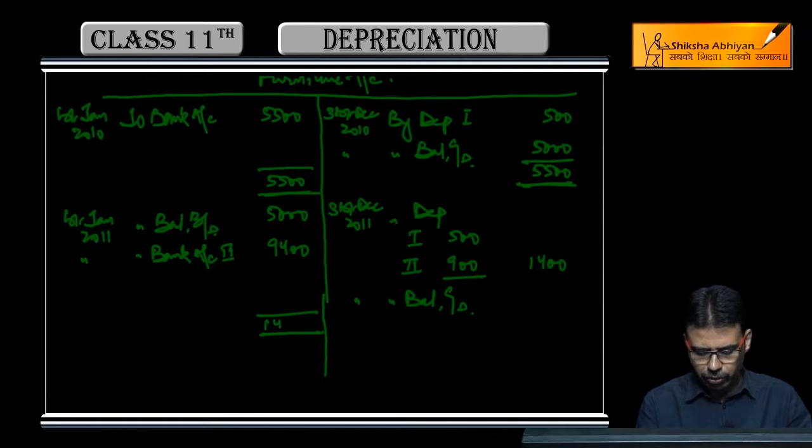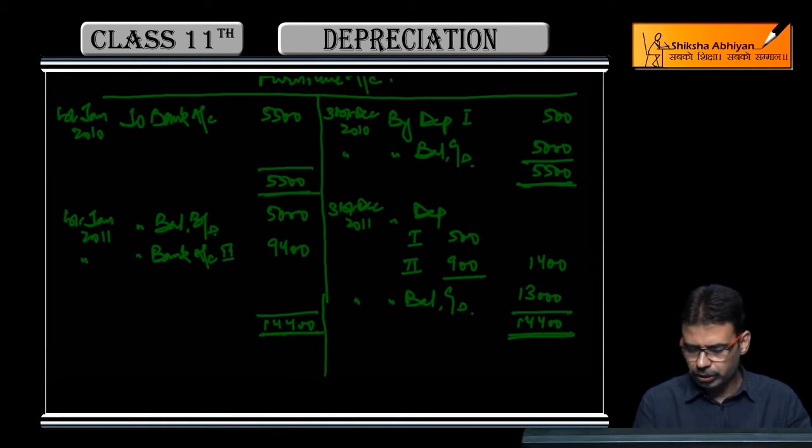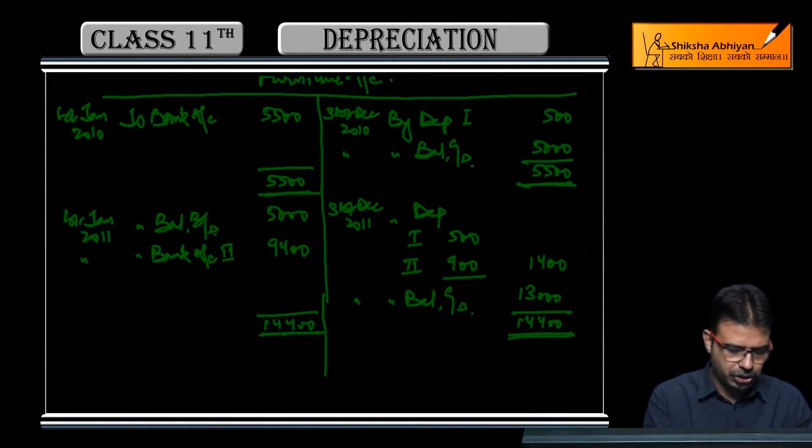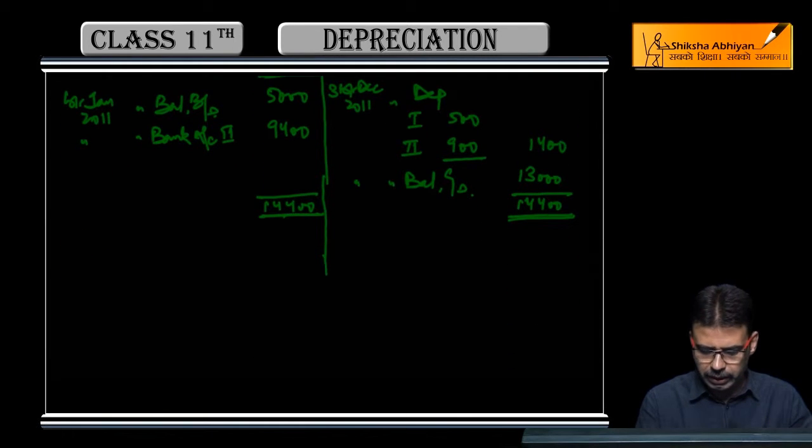Total is Rs. 14,400. From Rs. 14,400 minus Rs. 1,400 depreciation, the balance is Rs. 13,000. We will carry this balance forward.